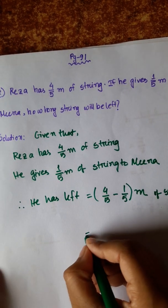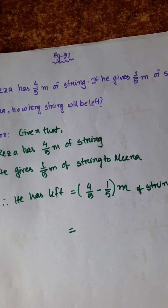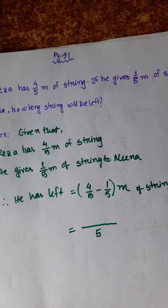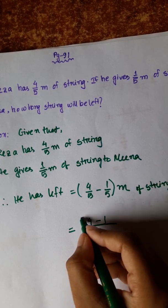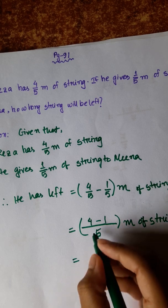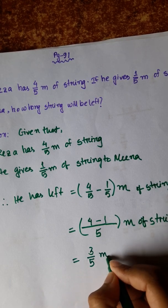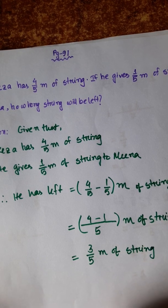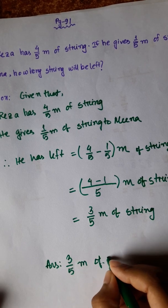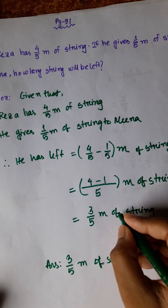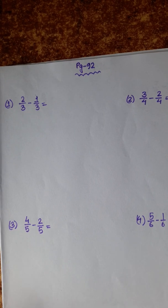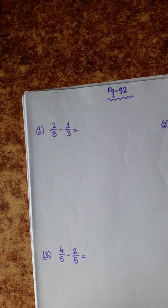For fraction subtraction, the denominator is the same, so we don't need to find the LCM. We just subtract the numerators: 4 minus 1 equals 3 by 5 meter of string. So the answer is 3 by 5 meter of string.